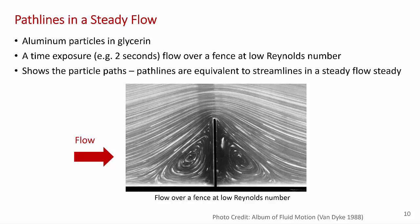In a steady flow, these path lines are always tangent to the local velocity. So this is another way to visualize the streamlines in a steady flow.